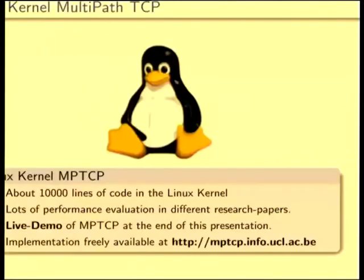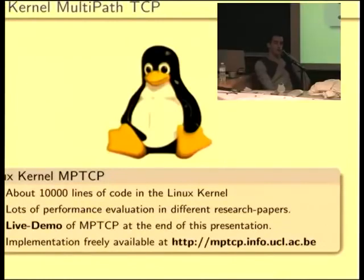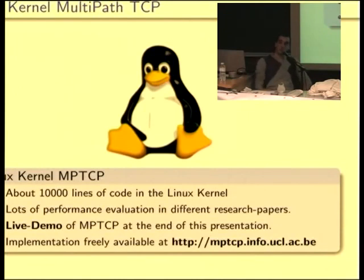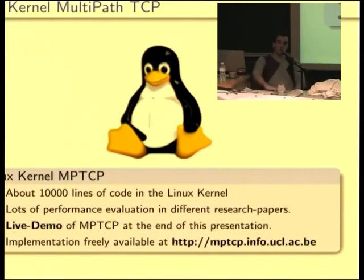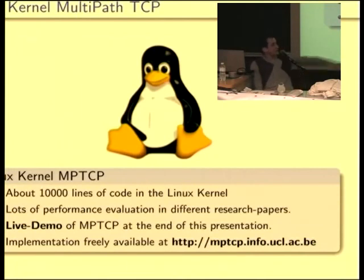So what have we done at the IP networking lab at the UCL? We have implemented MPTCP in the Linux kernel. It's a very extensive extension to TCP — about 10,000 lines of code. We have done performance evaluations and validations, and it's presented in research papers. I will show you a live demo at the end, because I have installed our kernel on my notebook. Our implementation is open source and publicly available on our website.